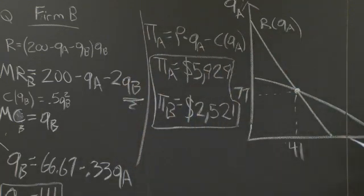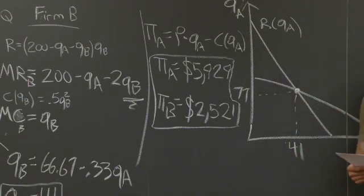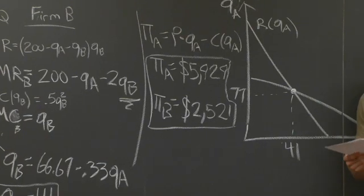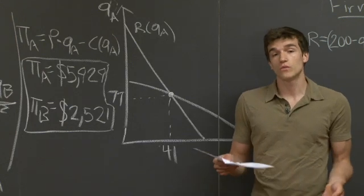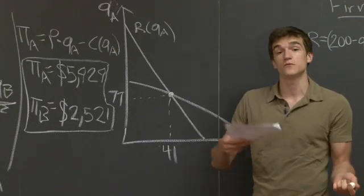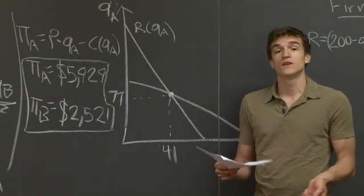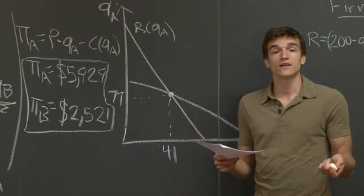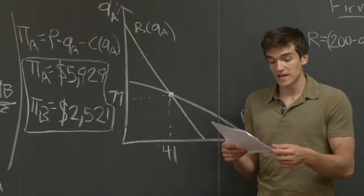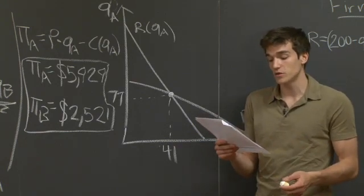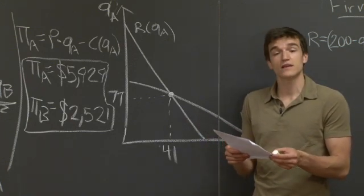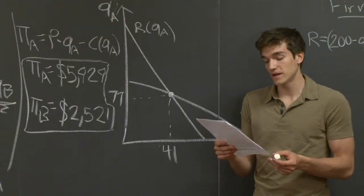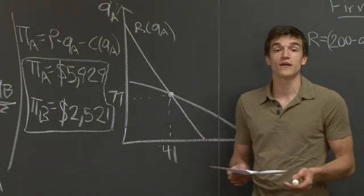Part B of this problem asks us to look at something different from the Cournot equilibrium. Instead of neither firm being able to move first, we're going to look at the case where one firm gets to decide how much to produce before the other. If you get to decide first, you get to produce a higher quantity and capture more profits. Part B says: suppose firm A chooses how much to produce before firm B. In this case, firm A is the Stackelberg leader and B is the follower. We'll calculate the quantities, the market price, and the profit for each firm.